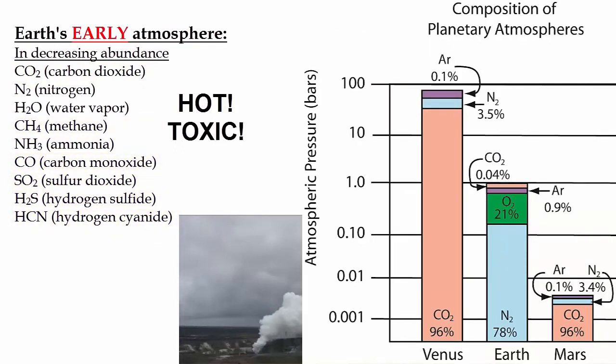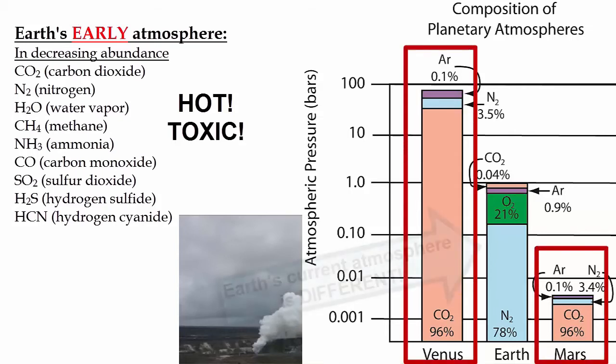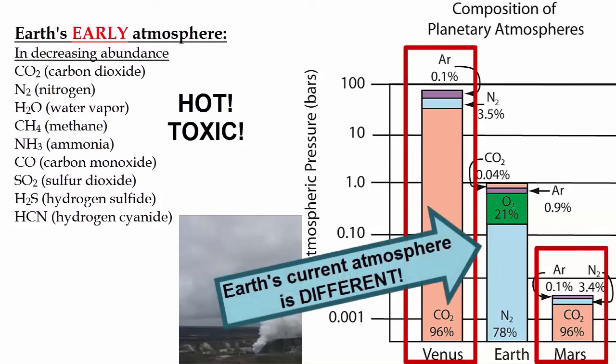Let's compare early Earth's atmosphere with the atmospheres of other rocky planets in our solar system today. The three rocky planets with atmospheres — Mercury has no atmosphere — show two very similar atmospheres and one very different one: Earth's. Venus and Mars both have carbon dioxide as the major atmospheric gas, much like Earth's early atmosphere, followed by nitrogen and argon. Notice the lack of any oxygen. Why is Earth's atmosphere today so different than it was originally, and so different than the other two rocky planets that are its neighbors?